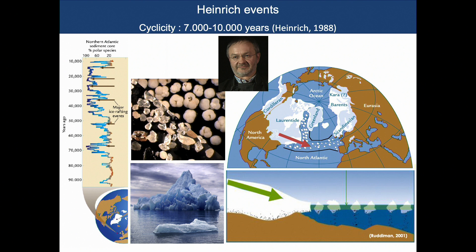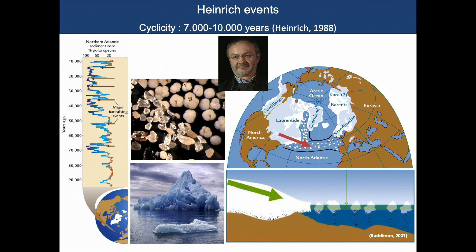The other hypothesis is that every 7,000 to 10,000 years, warm subsurface currents coming from the Southern Hemisphere attacked the ice shelves, creating pathways for continental ice to enter the North Atlantic. During Heinrich events, the zone of maximum accumulation of coarse sediment was between roughly 40 and 50 degrees north — we call this the Ruddiman belt.